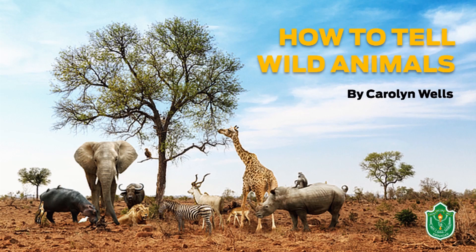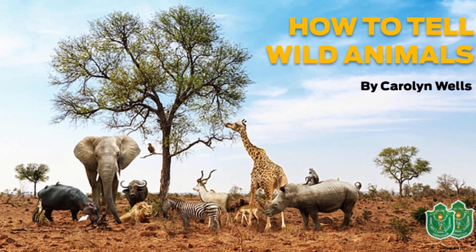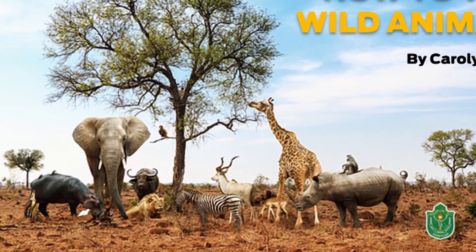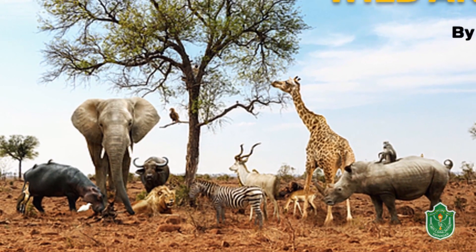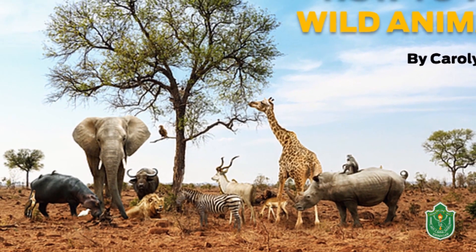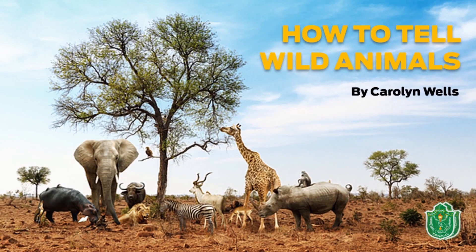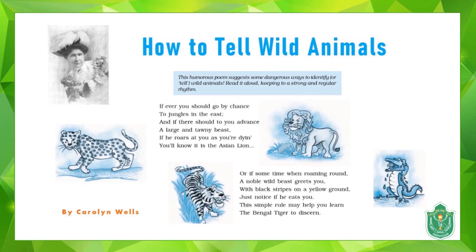Hello children, I hope you're doing good today. I'm going to discuss a poem by Carolyn Wells. The title of the poem is 'How to Tell Wild Animals.' In this title, the word 'tell' basically means how to identify or to distinguish wild animals. The poet in this poem has given us different ways to identify different wild animals.